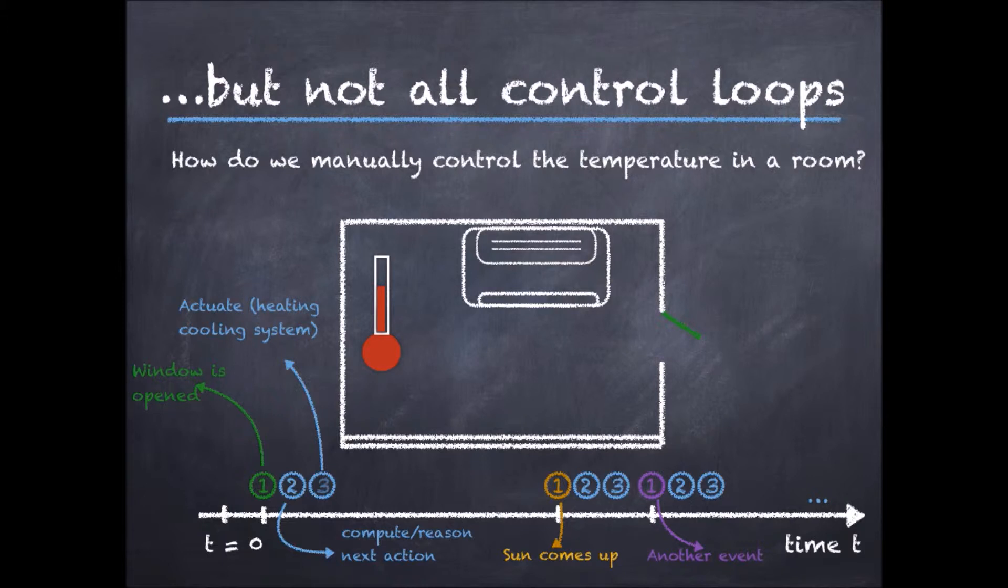Now it is obvious why the human operator does this. It would be very time-consuming to control it periodically. But why should a digital system always do it periodically, or not?